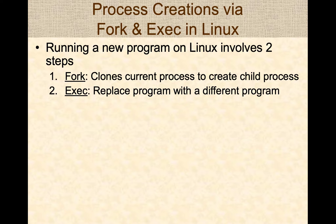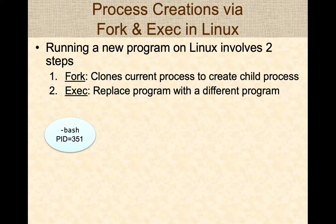Running a new program on Linux involves two key steps. The first one is to fork a current or existing process to create a new child process. Next, typically the child replaces the currently running program with a different program, thereby running a new program in Linux. Let's look at it through an example. Assume we are running a command through the bash shell and we want to run a new command, say ls-l.